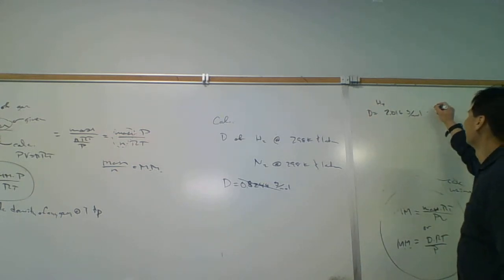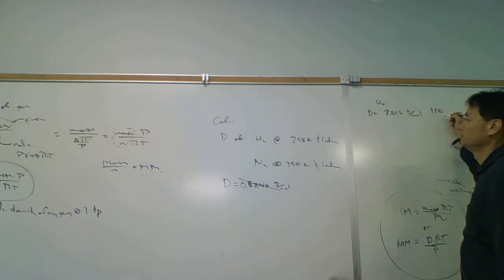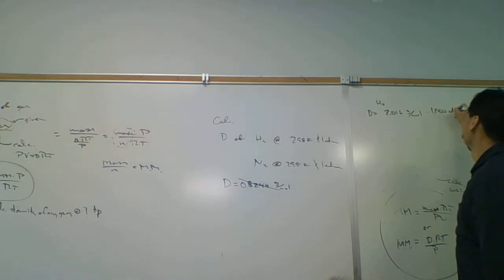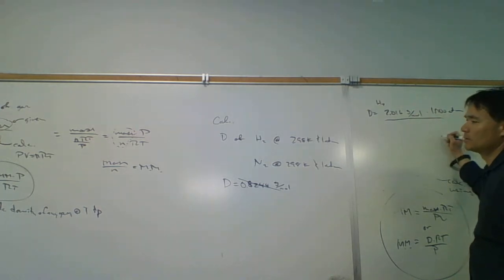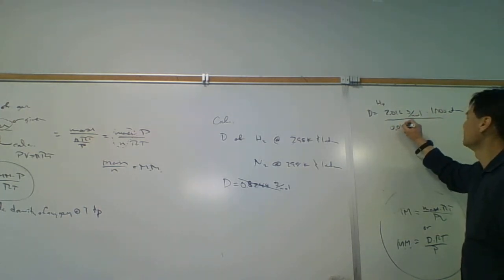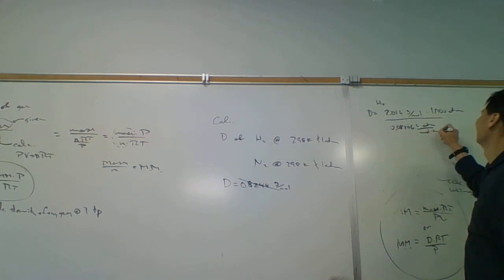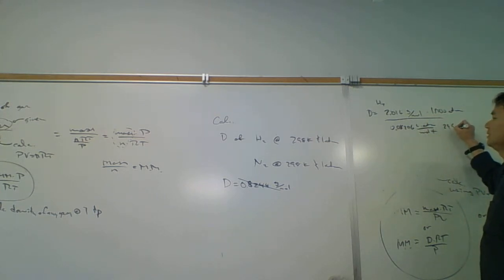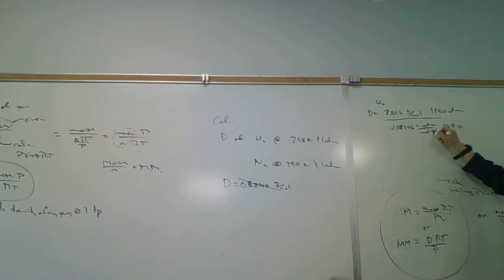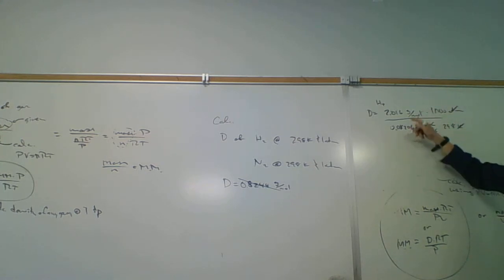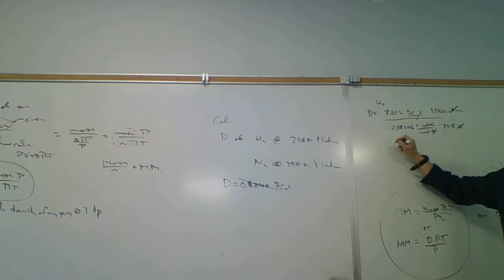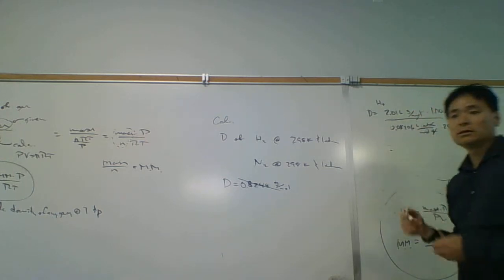What is the pressure? The pressure is exactly 1.00 atmosphere. R is 0.08206 liters times atmosphere over mole Kelvin, and T is 298 Kelvin. So the Kelvin cancel, the atmospheres cancel, the moles cancel, and that should give us grams per liter. That should be our units.